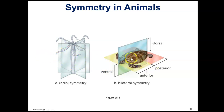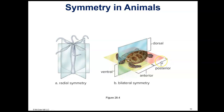But in this turtle or tortoise, there is only one way to cut the animal in half and get equal symmetrical halves. This animal has a head region and a tail region. The underside region is the ventral and the back region is the dorsal. The head is the anterior and the back is the posterior region. These are directional terms you can use when an animal has bilateral symmetry.